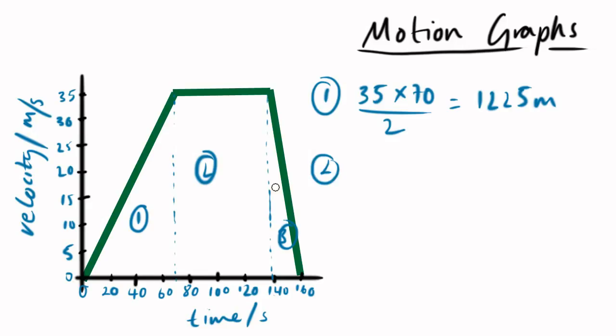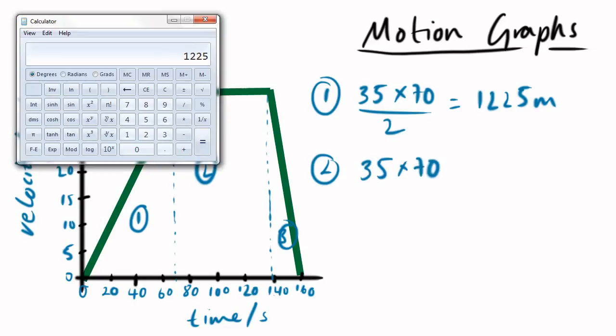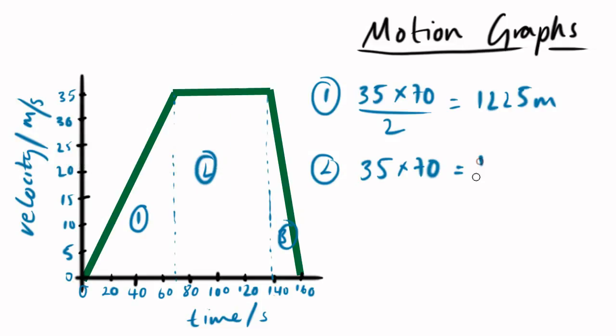Let's add on the rectangle in the centre. That's 35 times 70 to 140. So, that's 35 times 70 again. That second section has gone 2,450 metres.